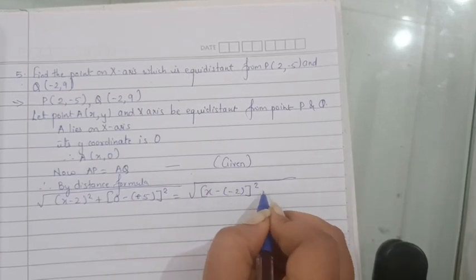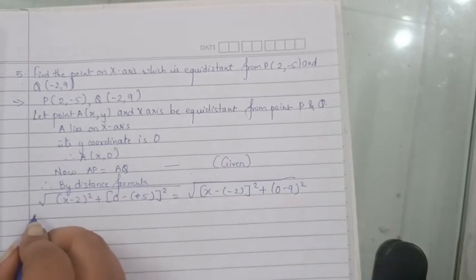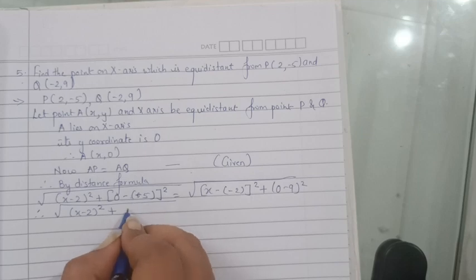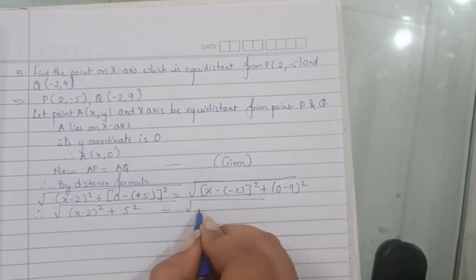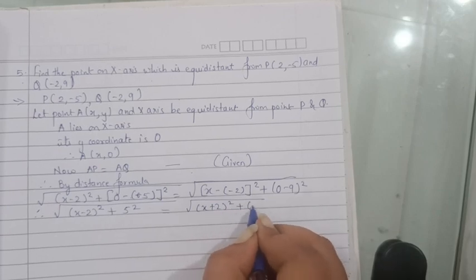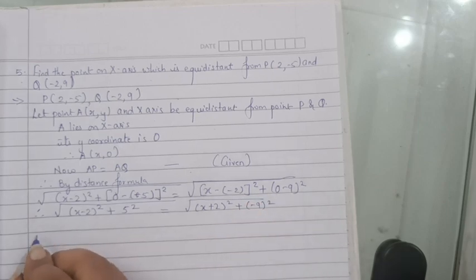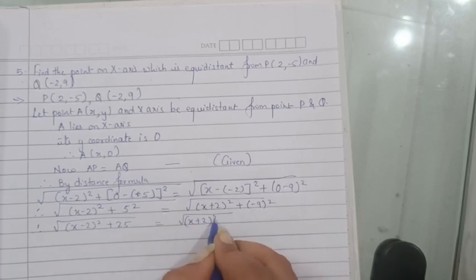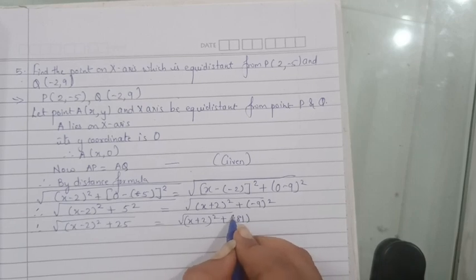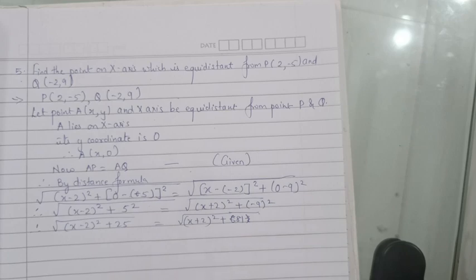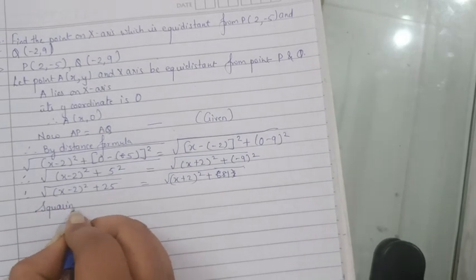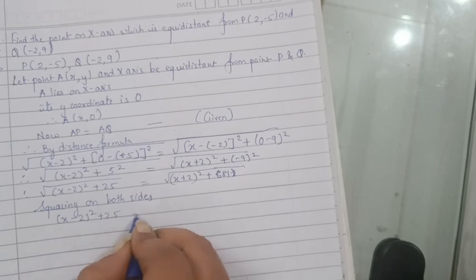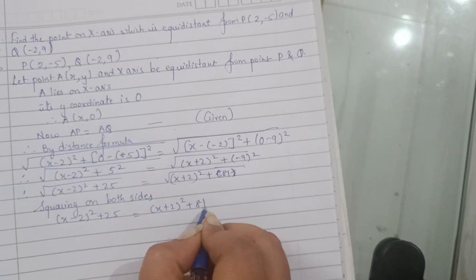Under root of (x - 2)² + (0 - (-5))² is equal to under root of (x - (-2))² + (0 - 9)². Opening this: (x - 2)² + 5² = (x + 2)² + (-9)². Therefore (x - 2)² + 25 = (x + 2)² + 81. Squaring both sides removes the square roots.